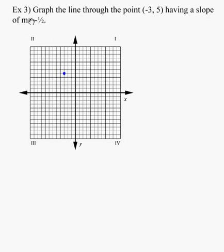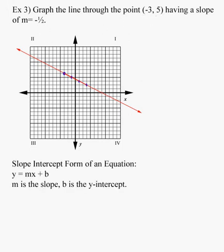The slope is negative 1/2. You can think of that as go down 1, right 2. So we'll go down 1, right 2. From there, we'll go down another 1 and right 2 more. From there, we can go down another 1 and right 2 more. We get a couple of them. We can connect the dots and draw the equation, draw the graph of our equation. So there's the graph of a line that goes through the point (-3, 5) and has a slope of negative 1/2.